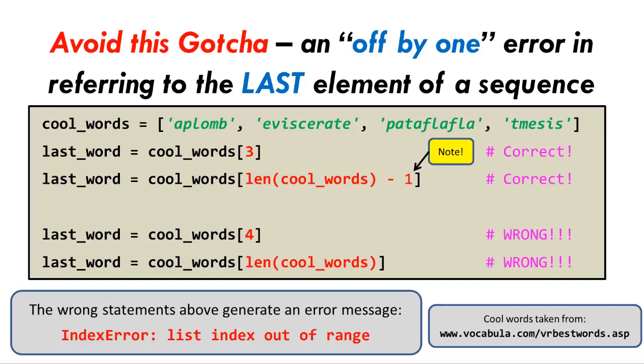Bottom line: first, be familiar with this index out of range error message and realize that if you get it, you should simply check the index that you used. Second, avoid this off by 1 error. That is, be mentally tough and use the length of the sequence minus 1 if you want to refer to the last item of the sequence.